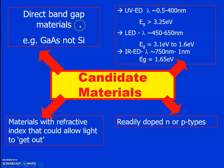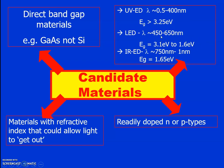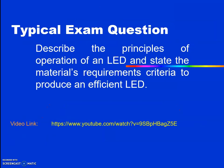We choose direct bandgap materials with a suitable refractive index to allow light to exit the material. At an energy gap of 3.25 eV, you get a wavelength in the UV range. For energy gaps between 3.1 and 1.6 eV, the wavelength falls in the visible range of 450 to 650 nm. We also have infrared LEDs: at an energy bandgap of 1.65 eV, the wavelength is around 750 nm, in the infrared region. Key exam points: the working principle of LED is electroluminescence, and the type of materials used for LED are direct bandgap materials.